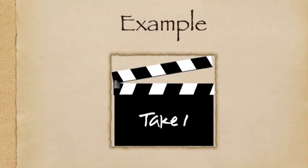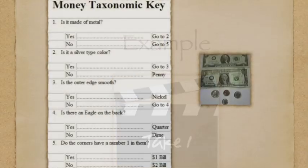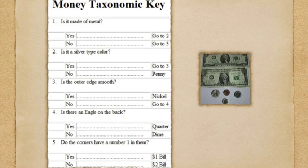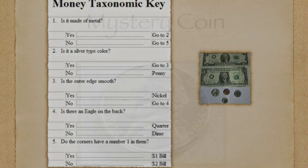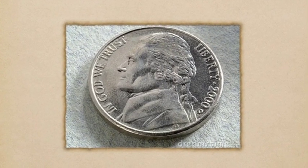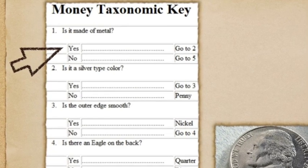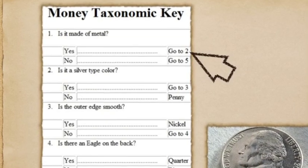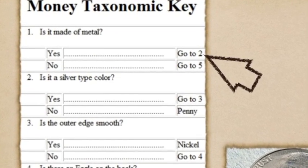Let's go ahead and try to follow the path of a dichotomous key with a familiar topic: money. On this slide, we see a picture of paper money and coins. Also provided is the dichotomous key to help us identify our mystery coin. Let's pretend we do not know what coin this picture is showing. Looking at the first set of paired questions: is it made of metal? Yes or no. Our coin is made of metal, meaning it's not paper money, so we follow the directions and go on to question two.